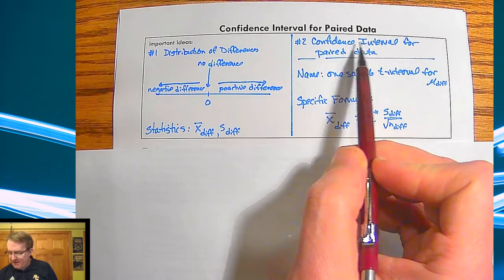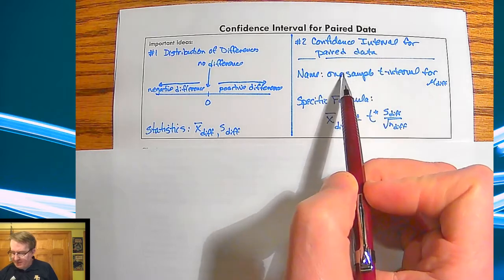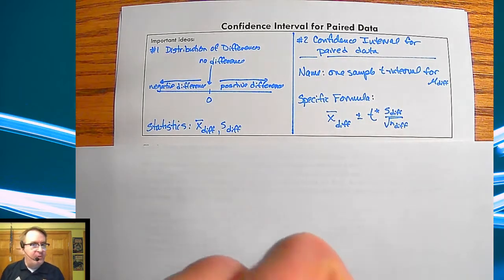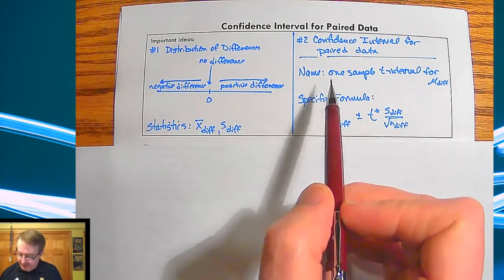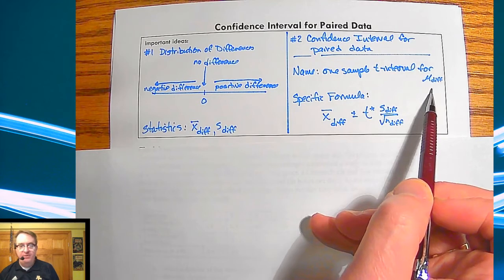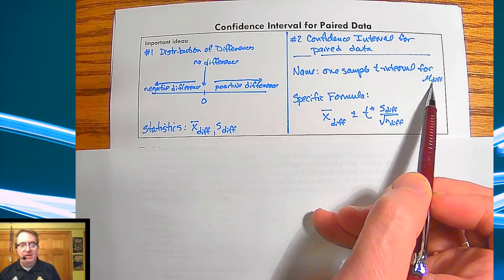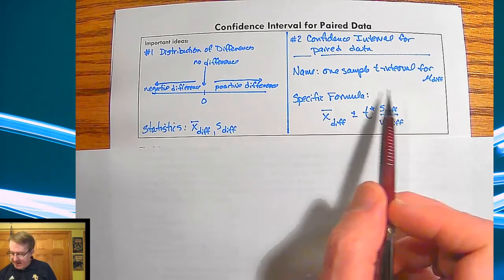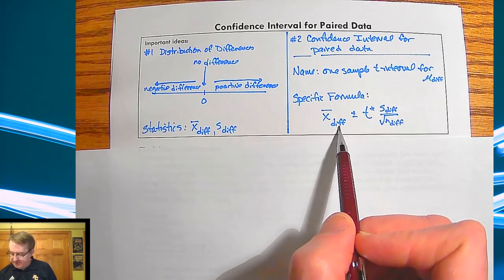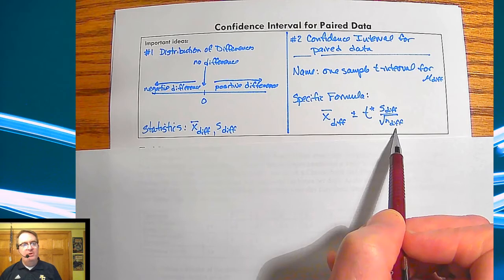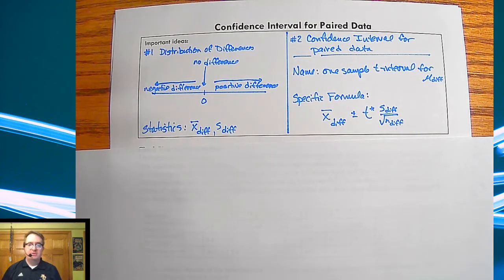For number two — confidence interval — the name is a one-sample T interval for the difference of means. The specific formula is the same as the original one, except that I've got differences noted here to make it very clear that you're talking about doing differences.